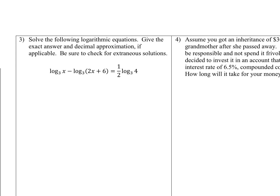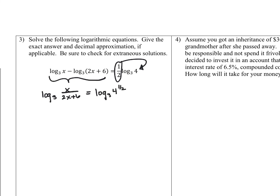Flipping to the next page. I see log on everything, but the 1.5 looks weird. I'll bring that as a power using the power rule. Then in two steps: combining the subtraction of two logs into a single log as a quotient gives log base 3 of (x over (2x plus 6)) equals log base 3 of 4 to the one-half. And 4 to the one-half power is the square root of 4, which is 2.